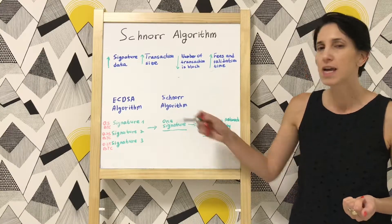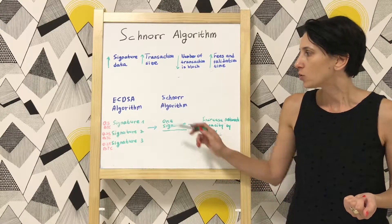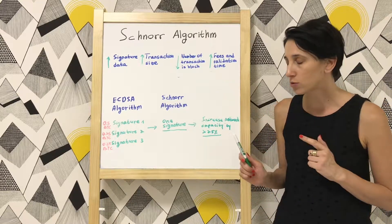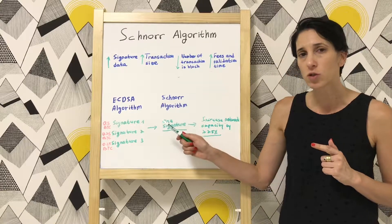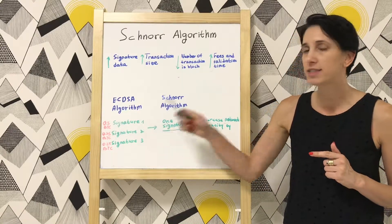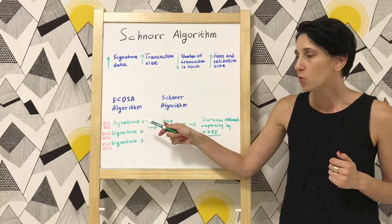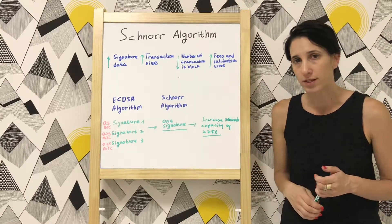Now let's see how it works today. If Alice wants to send Bob one Bitcoin but from several sources, each source will have its own dedicated signature. This is the current implementation with elliptic curve digital signature algorithm.